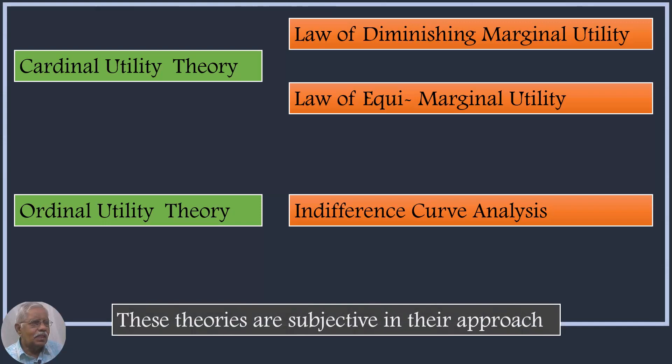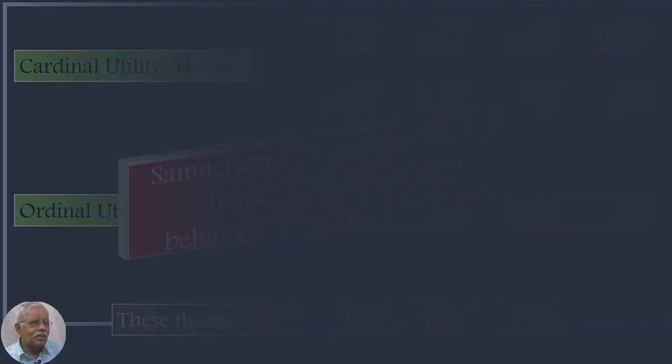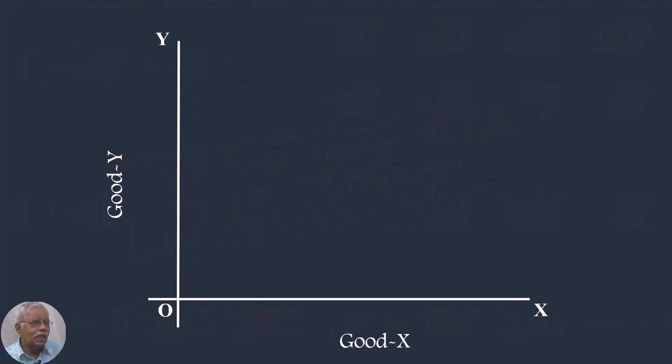Samuelson claims that his theory is objective and behavioristic in its approach. In developing Revealed Preference Theory, Samuelson uses the price line as developed by J.R. Hicks, but dropped the concept utility.